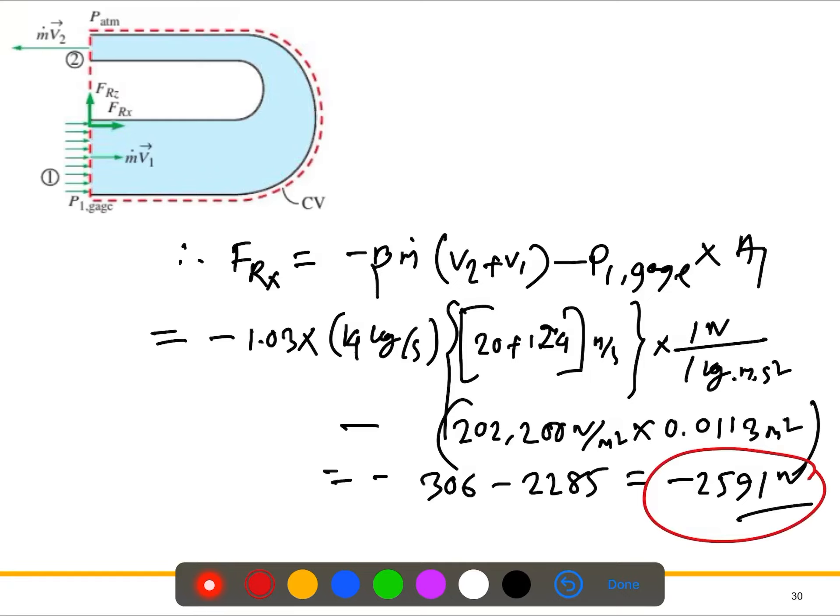That means you can see it's negative x direction, meaning it's trying to separate the pipe.